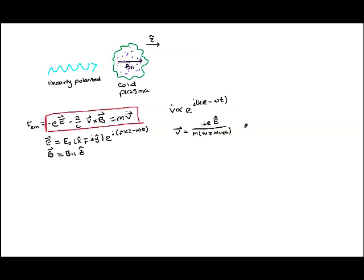We can define our cyclotron frequency as the charge of the electron times the parallel magnetic field divided by the mass of the electron times the speed of light. We see that this result for our velocity is completely dependent on polarization, because the velocity of the electrons is proportional to the incoming linearly polarized electric field.